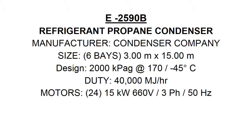Example label for a condenser: E-2590B, Refrigerant Propane Condenser. Manufacturer: Condenser Company. Size: 6 bays, 3 meter by 15 meter. Design: 2,000 kilo Pascal gauge at 170 / minus 45 degrees Celsius. Duty: 40,000 mega joules per hour. Motors: 24 x 15 kilowatt, 660 volt, 3 phase, 50 hertz.